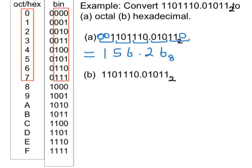Now for the hexadecimal conversion. What I do again is start at the fractional point and group the digits into groups of four. The first group of four moving left is 1110. The next group of four — I'm missing a digit at the beginning, so I add a zero — giving 0110. Moving back to the fractional point and moving right, my first grouping of four is 0101, and my last grouping of four I'm missing digits, so I add three zeros, giving 1000.